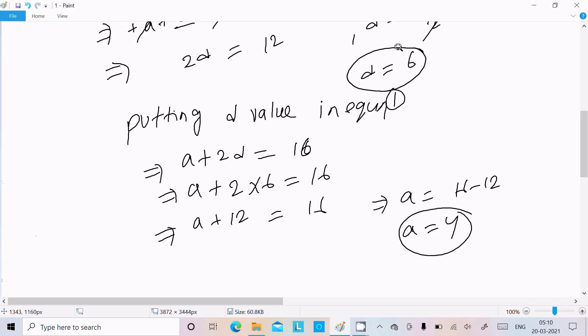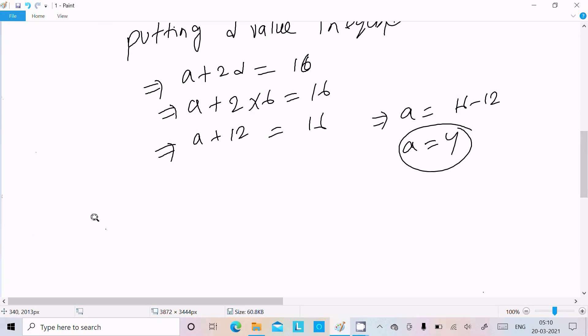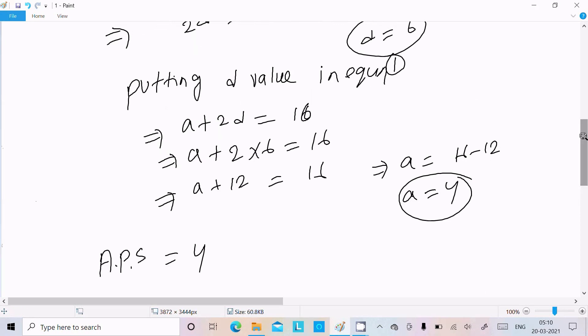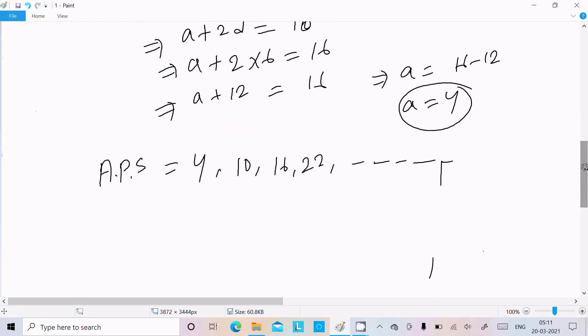Now let's write the AP. The arithmetic progression first term is 4. Since we add 6, the next term is 4 plus 6 which is 10, then 10 plus 6 which is 16, then 16 plus 6 which is 22, and so on. So the AP is 4, 10, 16, 22, and so on.